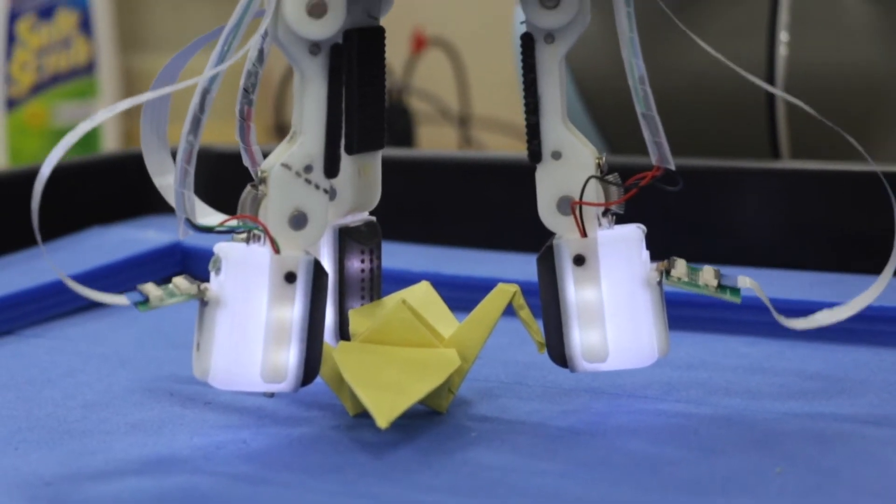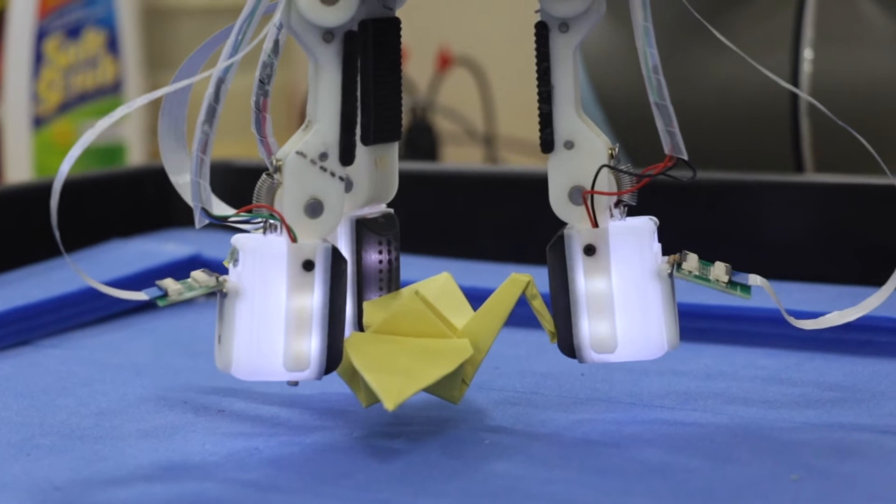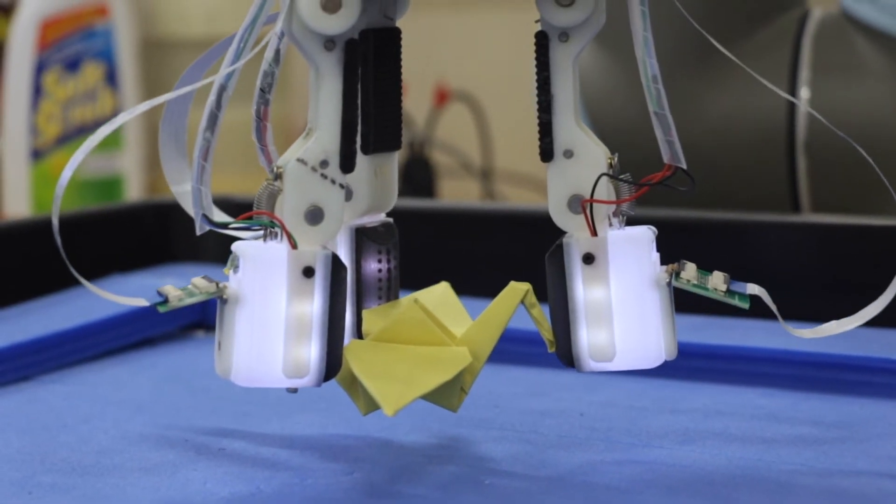In doing so, we both try to understand how the human sense of touch works by building it in a robot, testing it in reality, but also improve the capabilities of robots so that they can interact and manipulate the world with the ease that humans do.